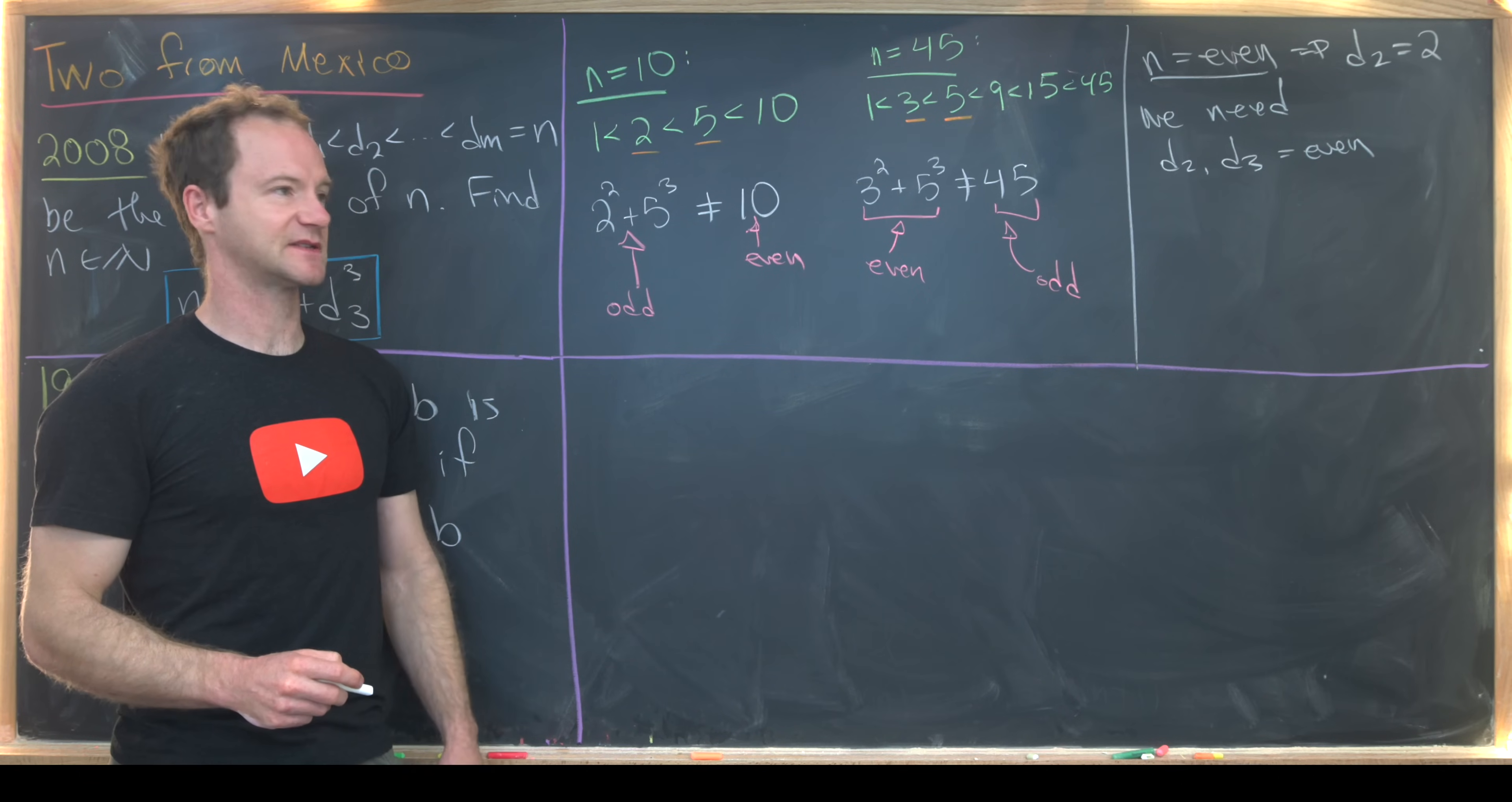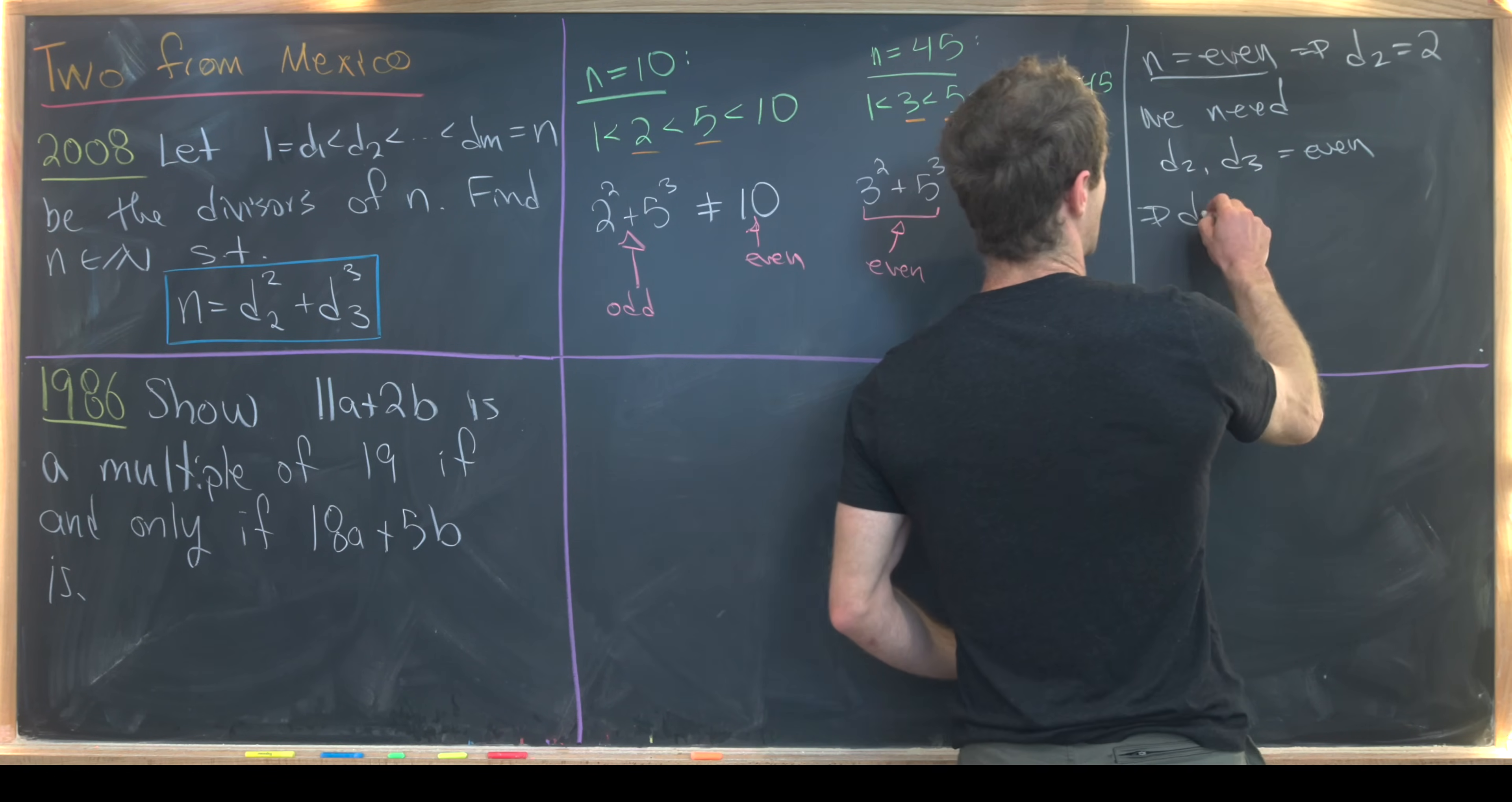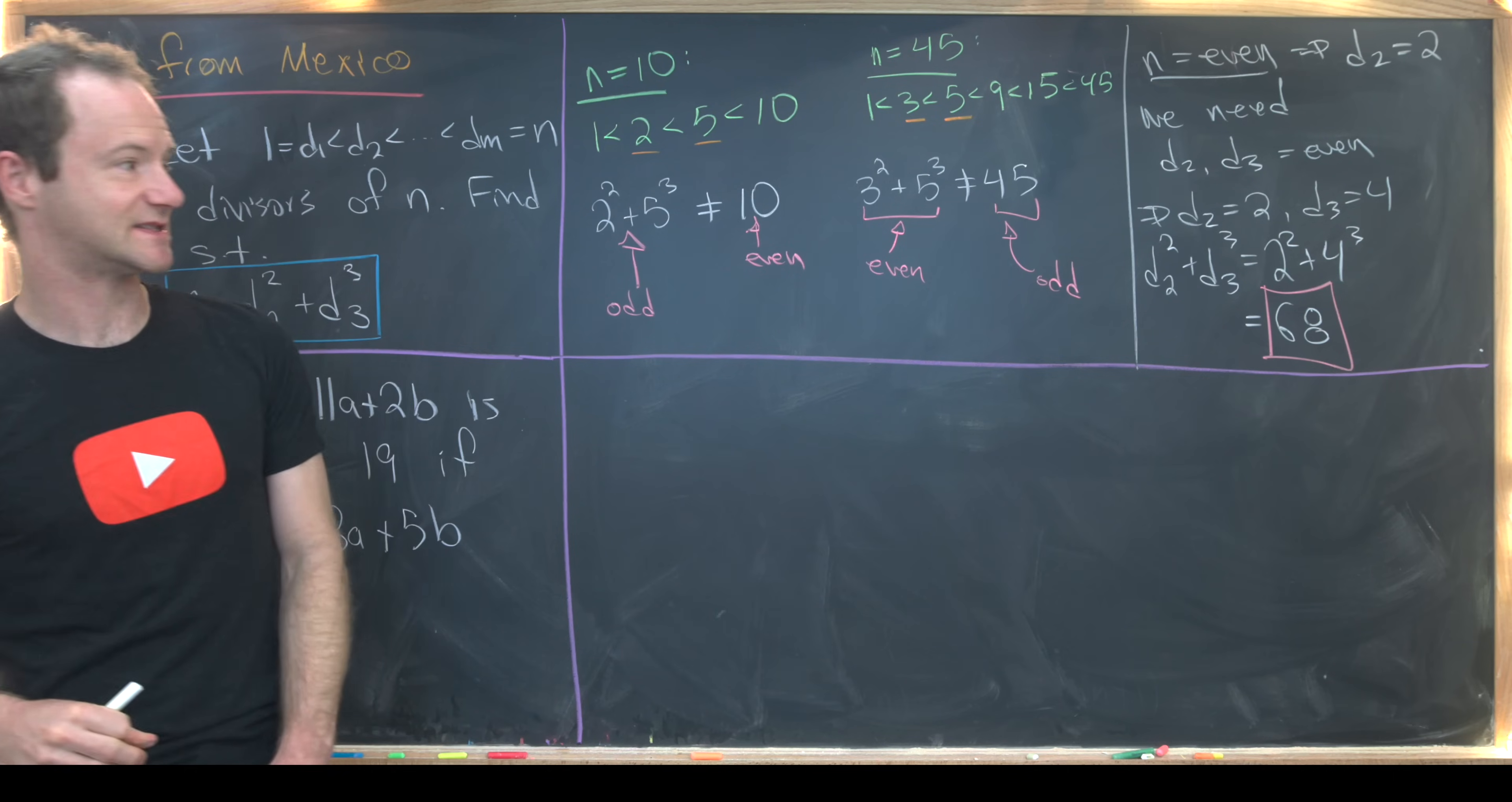So let's think about the possibilities for D3. Well, notice it can't be anything except for 4. Because if it's anything except for 4, then there would most definitely be some sort of divisor between D2 and D3, and so it wouldn't be D3 in the first place. So that means we have the following setup. D2 is 2. D3 is 4. That means we can take D2 squared plus D3 cubed is 2 squared plus 4 cubed. But that's going to be 68. So that means our only N that makes this work is 68.